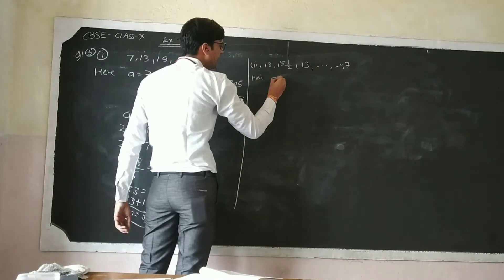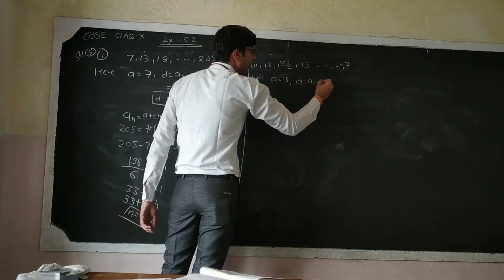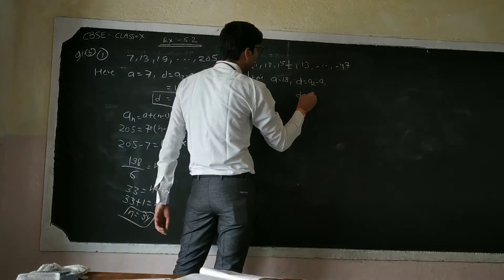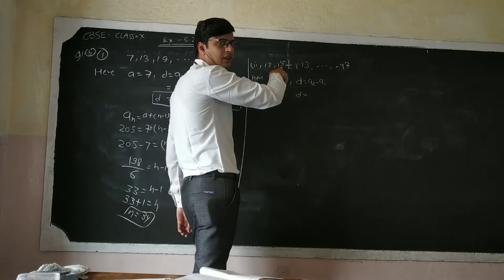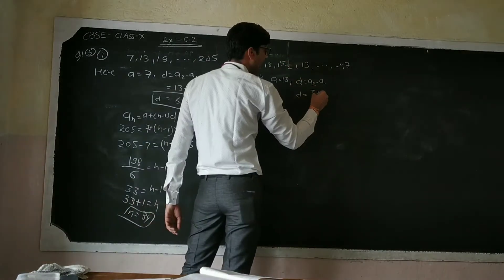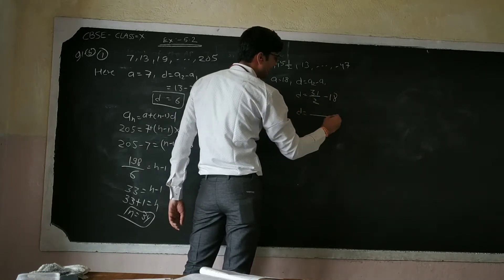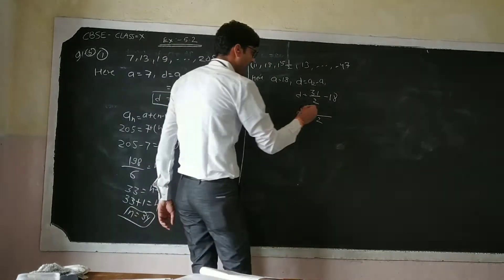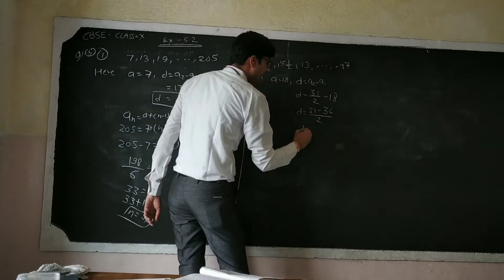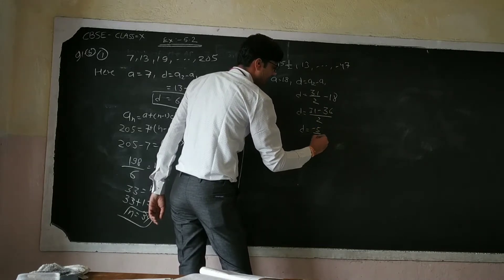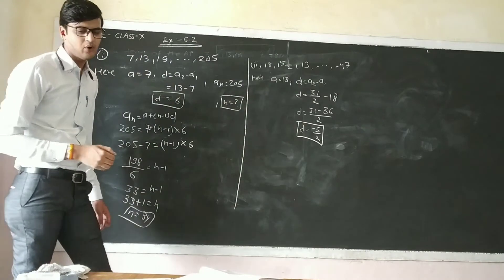So here A equals 80. To find D, we calculate A2 minus A1. A2 is 31 over 2, so D equals 31/2 minus 80. Taking LCM of 2: D equals (31 minus 160) over 2, which gives D equals minus 129 over 2. Wait — D equals 31 minus 160 over 2, giving D equals minus 5 upon 2.